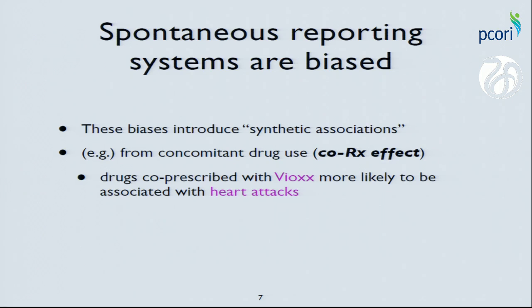Spontaneous reporting systems like the Adverse Event Reporting System, and observational data in general, are biased. These biases introduce what I've been calling synthetic associations — simply confounded associations. For example, it's very common to see aspirin co-prescribed with Vioxx. So in a naive analysis of the FDA's system, you'd find aspirin significantly increases your risk of heart attack, which is really driven by the enormous signal for Vioxx causing those false co-prescribed drug associations.